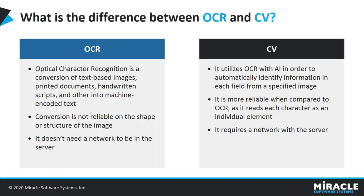Let's see the differences between OCR and CV. They may look alike, but there is a huge difference. OCR is a technology that analyzes an image, detects patterns, and if the image contains text, extracts it into a machine-readable format. CV, on the other hand, utilizes OCR along with AI to identify fields from a specified image. Since OCR is completely based on the image, automation relies on the UI images — if those images change slightly in structure, OCR won't be reliable. But if they remain the same, OCR is reliable.